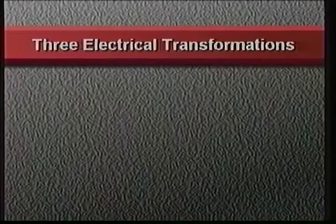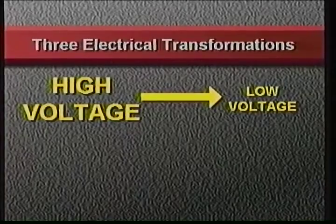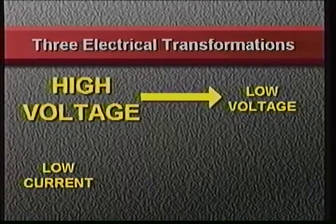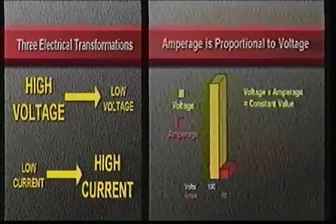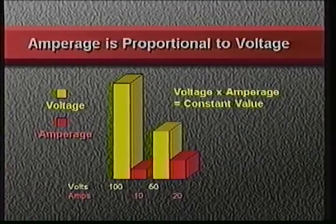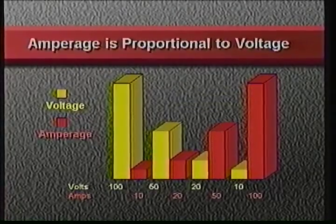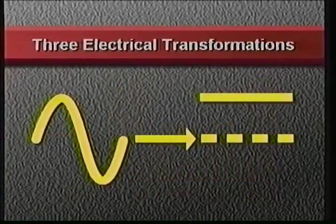Let's take a look at the three electrical transformations that occur inside a traditional arc welder. First, high voltage is reduced to low voltage, both to meet the requirements of the welding process and for safety reasons. Simultaneously, the voltage reduction proportionally increases the current, or amperage. The relationship between voltage and current is simple: a power source of 10 amps at 100 volts can be converted to 20 amps at 50 volts, or 50 amps at 20 volts, or 100 amps at 10 volts. Finally, AC power is converted to DC power.